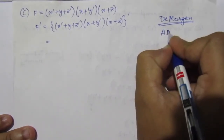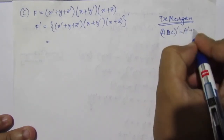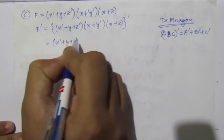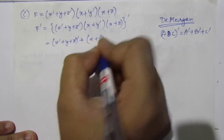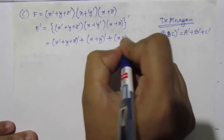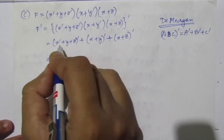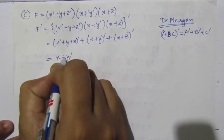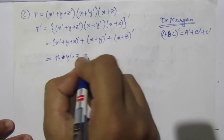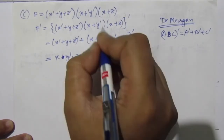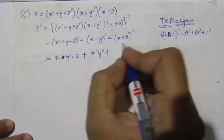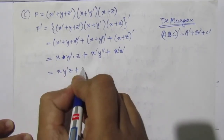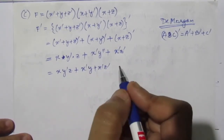So we can rewrite this expression as: (X̅ plus Y plus Z̅) whole bar, plus (X plus Z) whole bar. Applying De Morgan's theorem — A plus B plus C whole bar equals A̅·B̅·C̅ — the first term becomes X·Y̅·Z, and the second term becomes X̅·Z̅. Combining, we can write the final complement as XY̅Z plus X̅Y plus X̅Z̅. This is the complement of the third function.